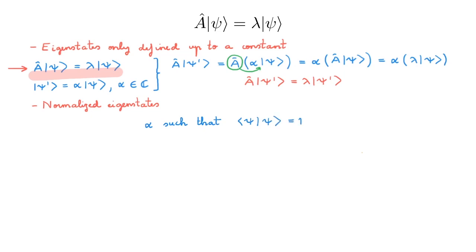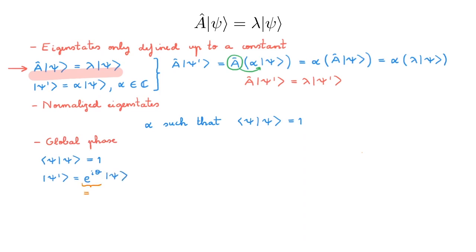Eigenvalues and eigenvectors are of course not exclusive to operators in state space — you can define them for operators in other vector spaces and they are useful in many different areas. But because state space is a complex vector space, there is one important extra subtlety compared to real vector spaces, which has to do with a global phase factor. Even after choosing alpha to make the length of an eigenstate equal to 1, we still have some extra freedom. Imagine psi is normalized and then build a new state psi prime by multiplying psi by a global phase e to the i theta. This global phase is just a constant, so psi prime is also an eigenstate of A with the same eigenvalue.